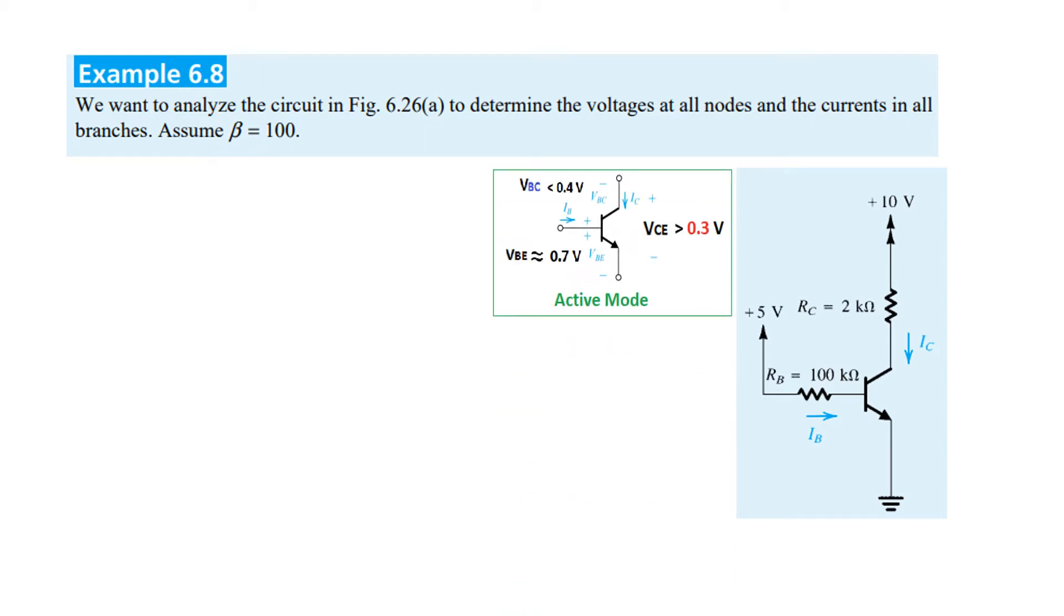To start with, I'll repeat this diagram discussed in previous videos. Here, the condition is that in active mode VCE has to be greater than 0.3V, VBE is forward biased, VBC is less than 0.4V, and VCE will be greater than 0.4V. We'll focus on VCE being greater than or equal to 0.3 volts for the circuit to be in active mode.